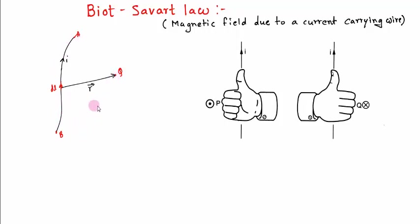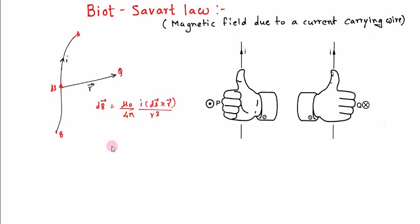...at this point Q is equal to dB = μ₀/4π × I dL bar cross R bar divided by R cube. Here μ₀ is the permeability of free space and dL bar is in the direction of current. The net magnetic field due to wire AB is going to be the integration of this.